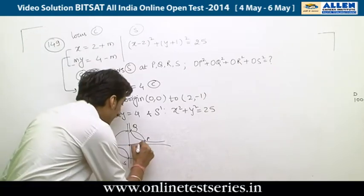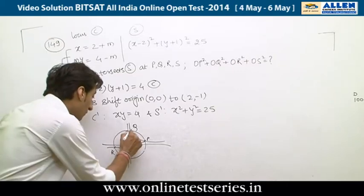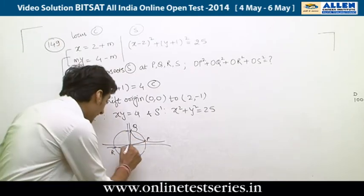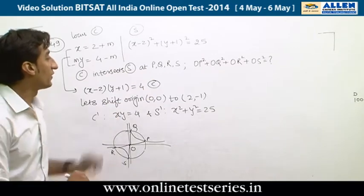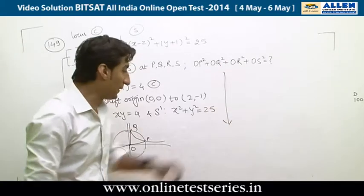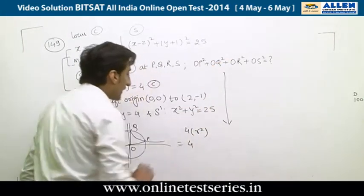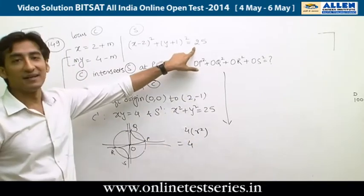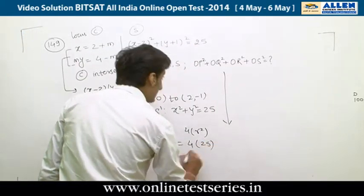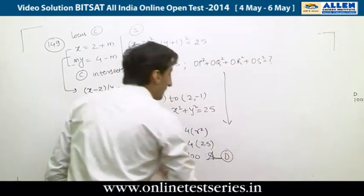Since P, Q, R, and S all lie on the circle, OP = OQ = OR = OS = radius = 5. Therefore, OP² + OQ² + OR² + OS² = 4 × 25 = 100, which corresponds to answer D.